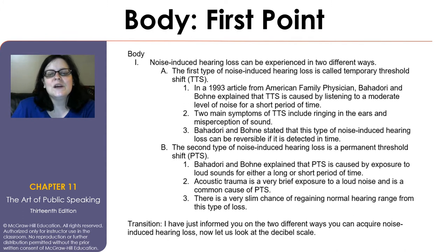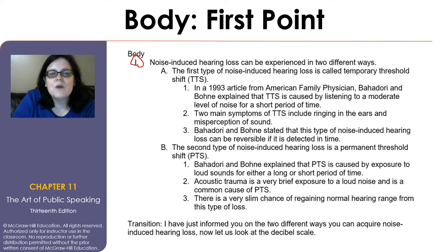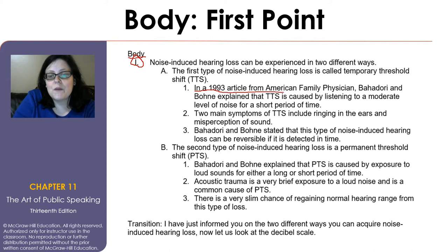In the body you want to include again, restart the Roman numerals. So before we had I, II, III, IV, etc., but you want to restart it once you go into the body of the speech. You also want to make sure that you are orally citing your sources during the speech itself. For instance, right here it says 'in a 1993 article from the American Family Physician, Badorian Bone explained that TTS is caused by listening to a moderate level of noise in a short period of time.' Now if you're citing a source that you already cited, you can just say that again rather than having to repeat everything.